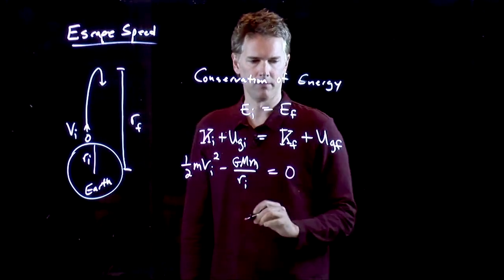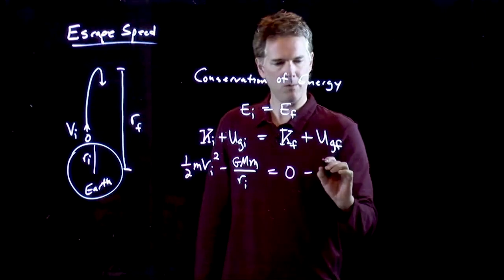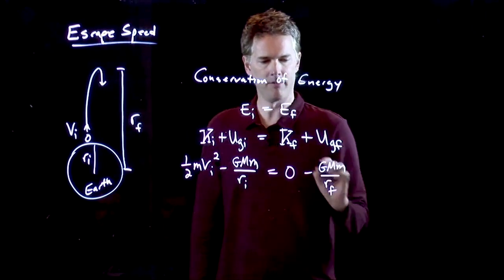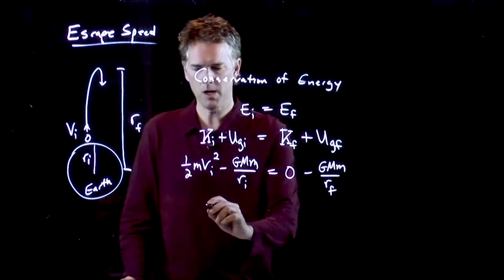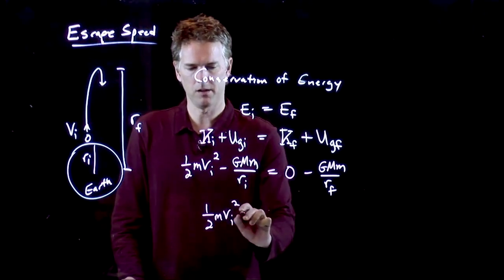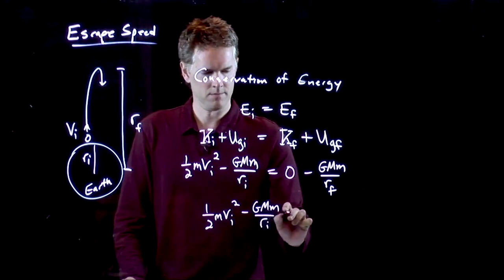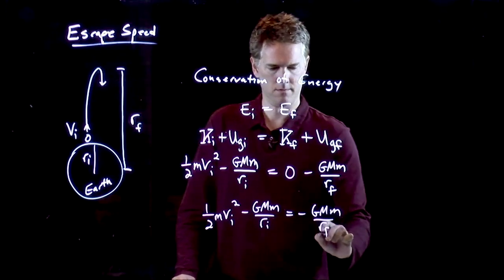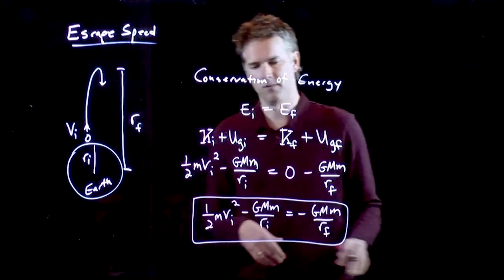What do I want to put here for the final kinetic energy? Zero, right? It's not moving. So that's zero. And then it's at a different height. So I want to put GMM over RF right there. And so this is the equation that tells you how high this thing is going to go. That's it right there.